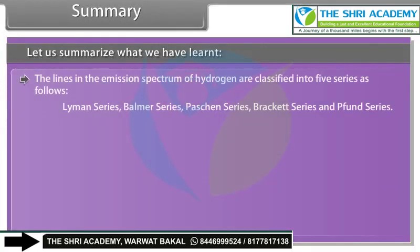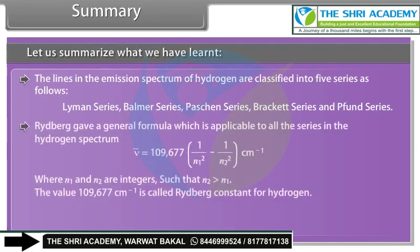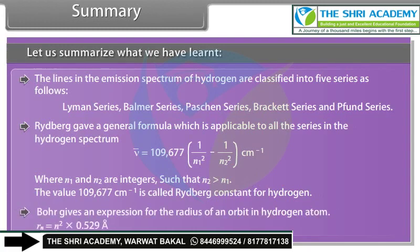The lines in the emission spectrum of hydrogen are classified into five series: Lyman, Balmer, Paschen, Brackett, and Pfund. Rydberg gave a general formula applicable to all series; the Rydberg constant for hydrogen is 109,677 cm⁻¹. Bohr's expression for the radius of an orbit in hydrogen: Rn = n² × 0.529 Å.